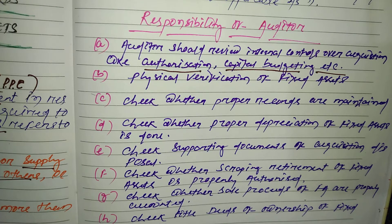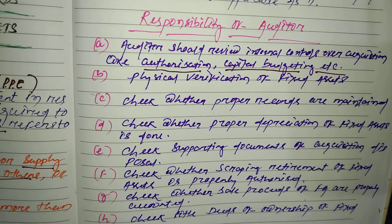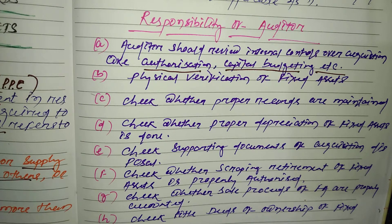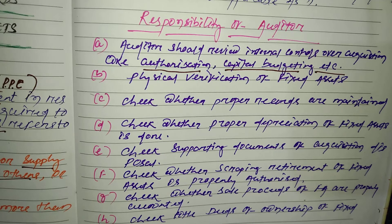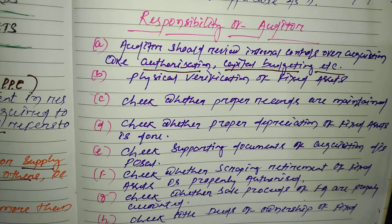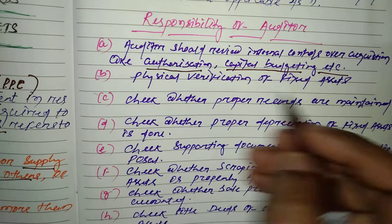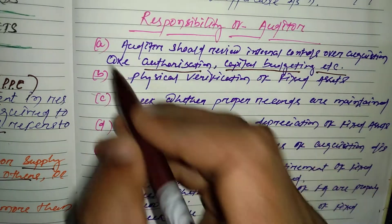The auditor needs to carry out physical verification of fixed assets. This is most important — the auditor needs to verify all the assets as per books of accounts and physically verify whether they exist or not. If any discrepancies are found, those should be noted in the audit report.